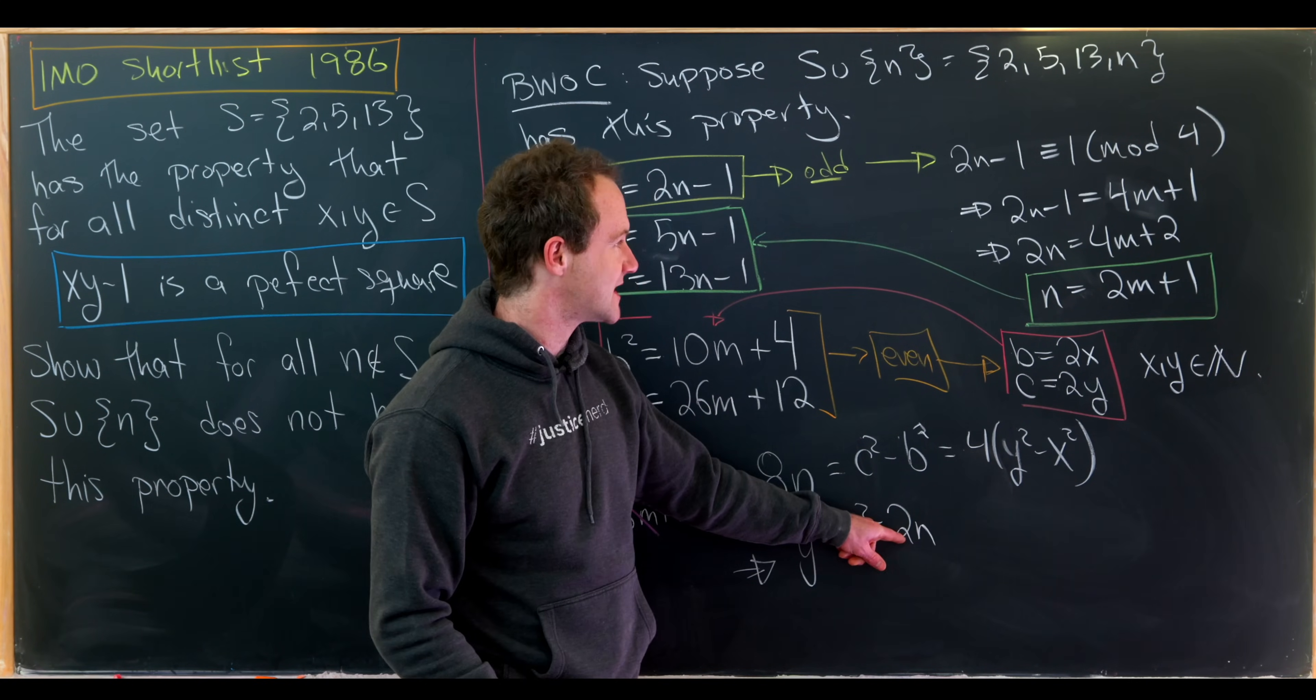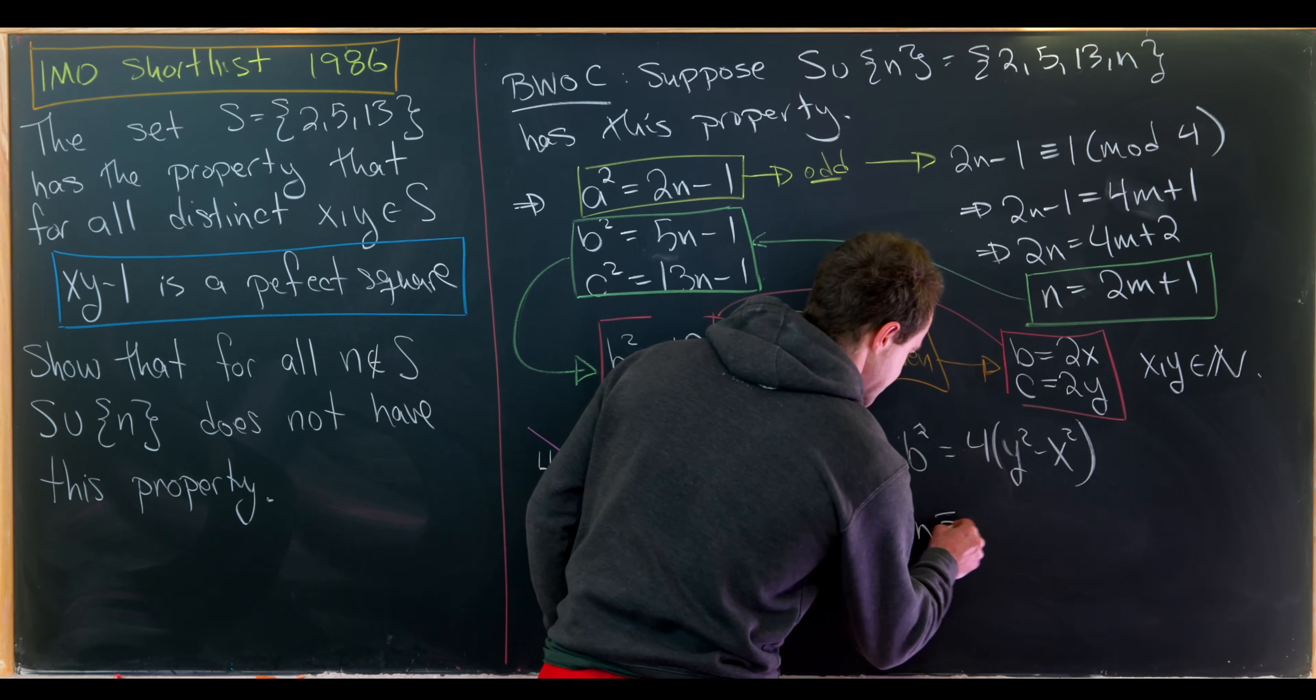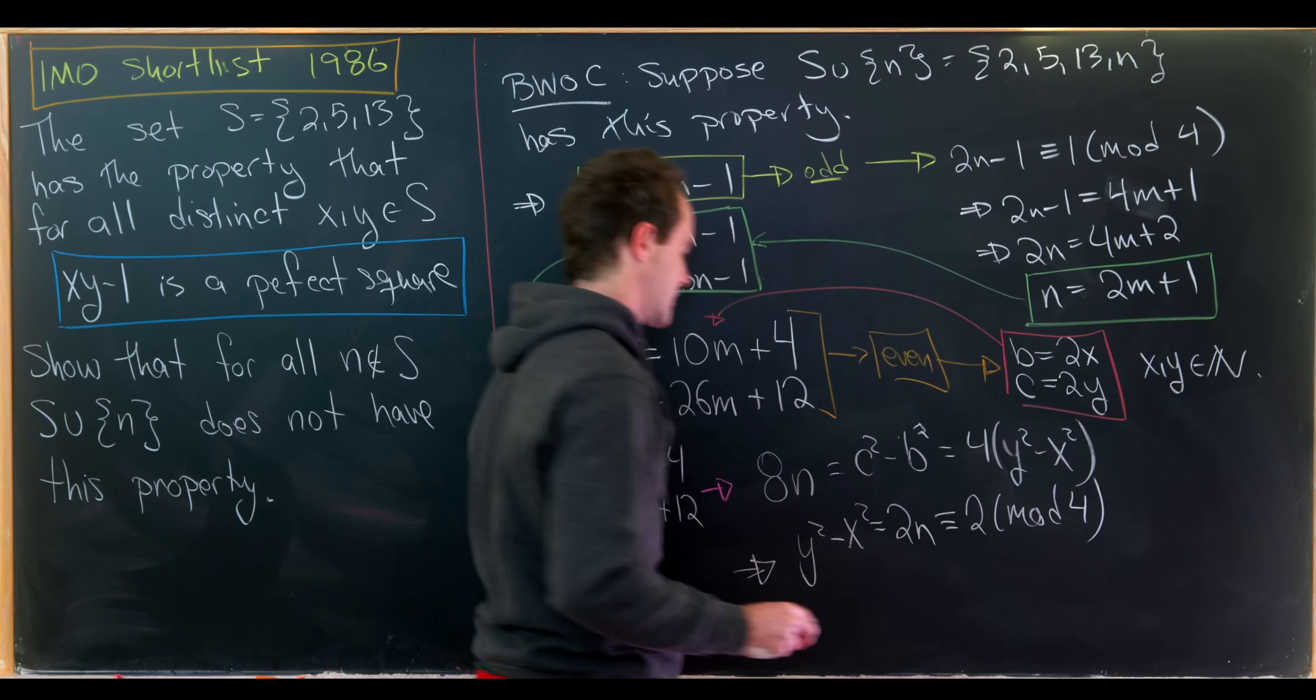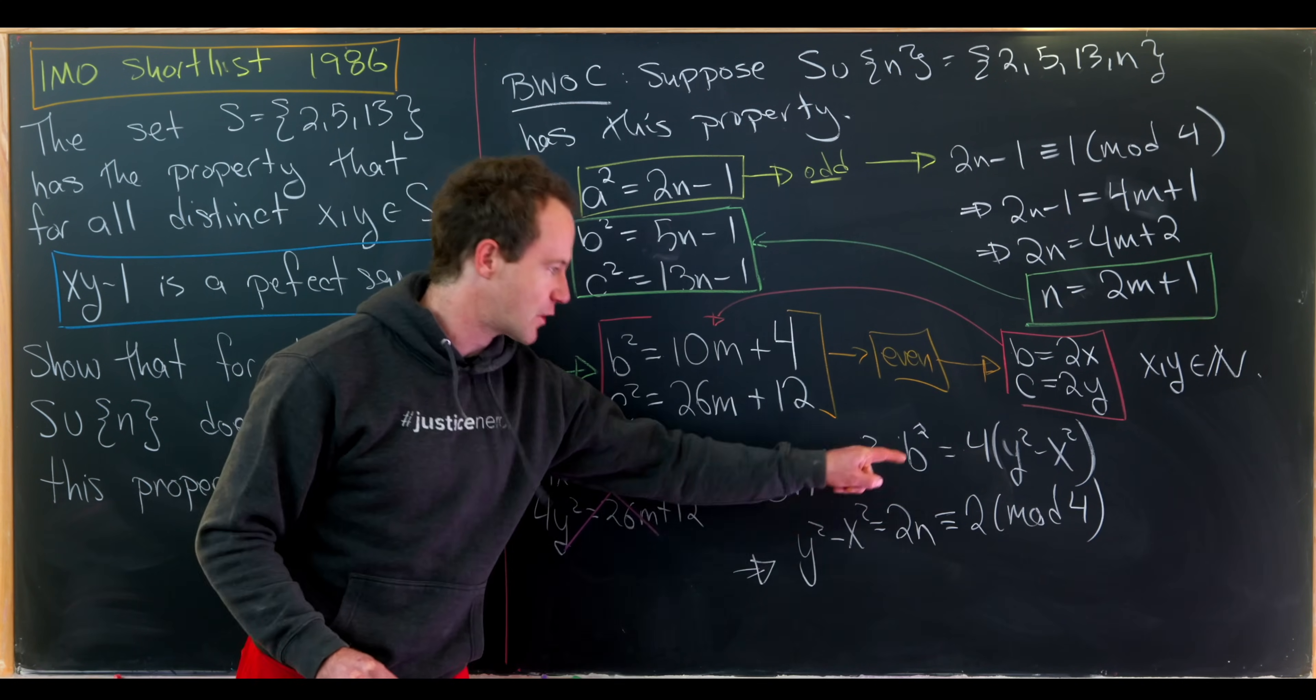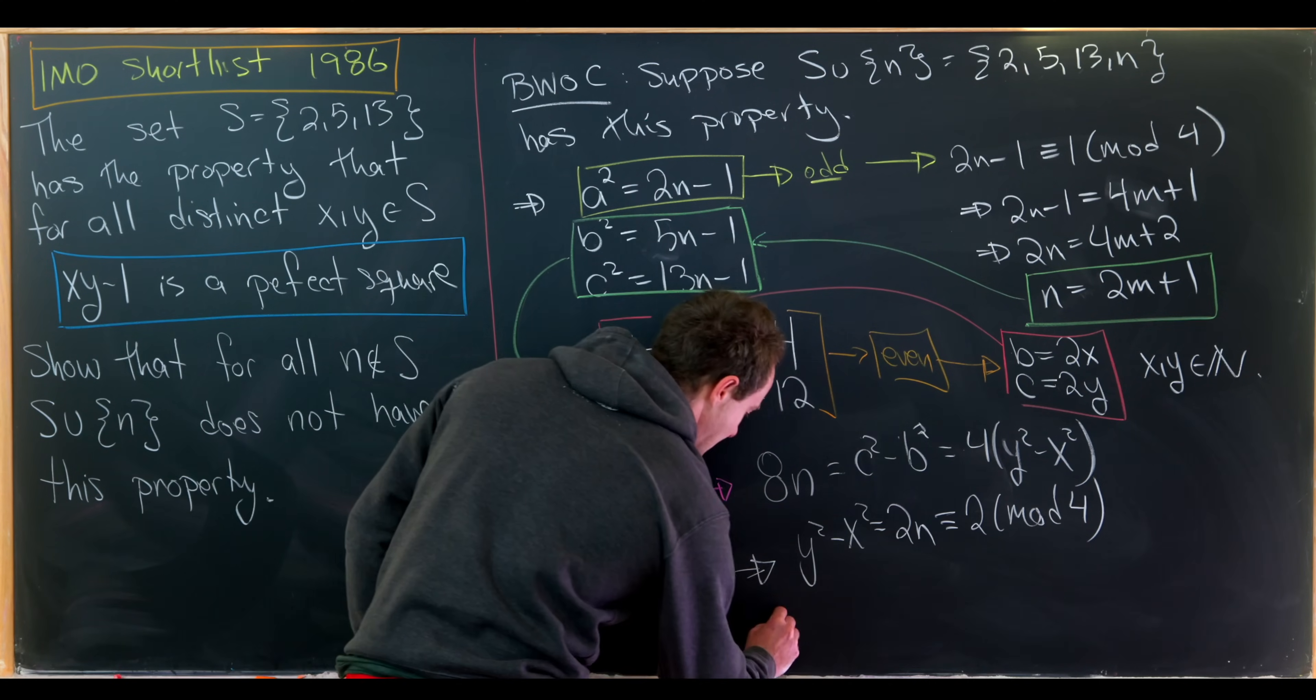But now let's notice that 2 times n is of the form 4m plus 2. So this is congruent to 2 modulo 4. So we have a difference of squares being congruent to 2 mod 4. But this is impossible.